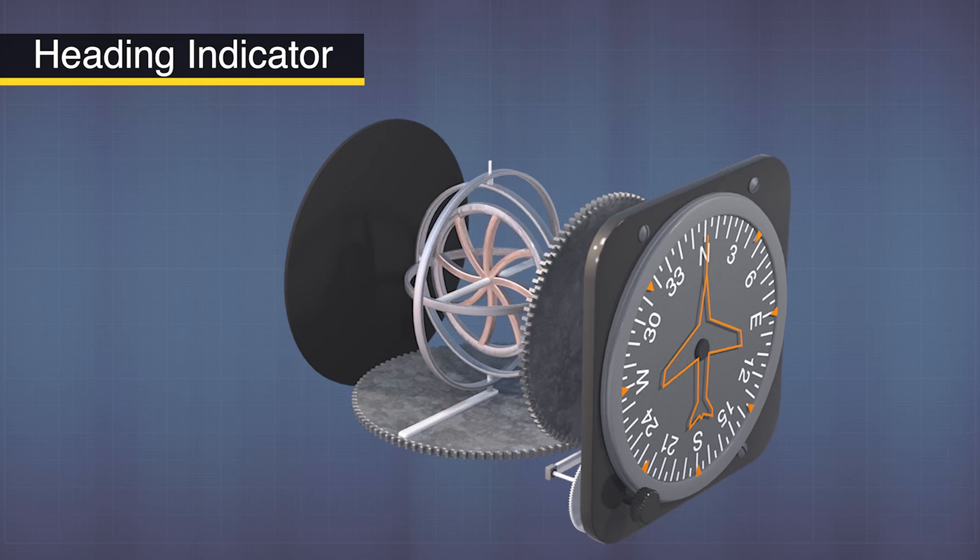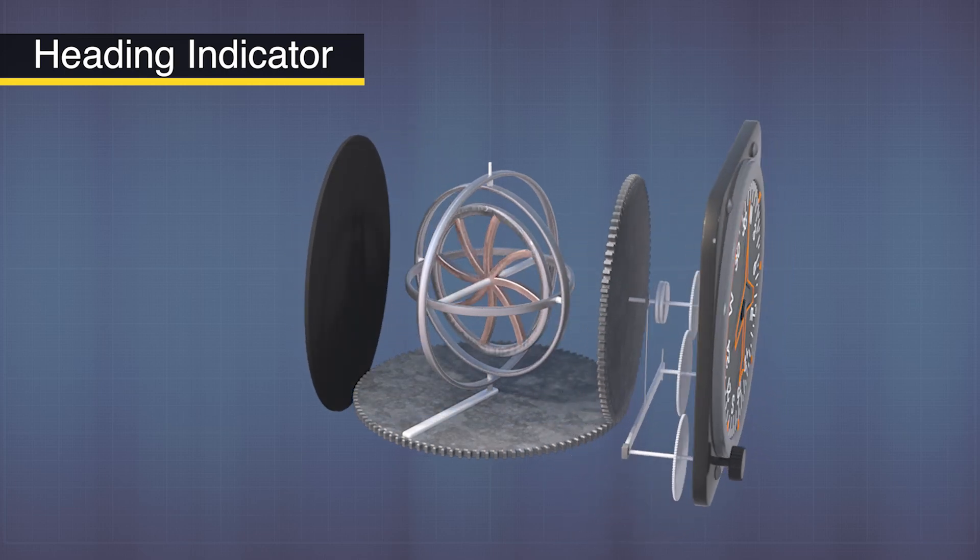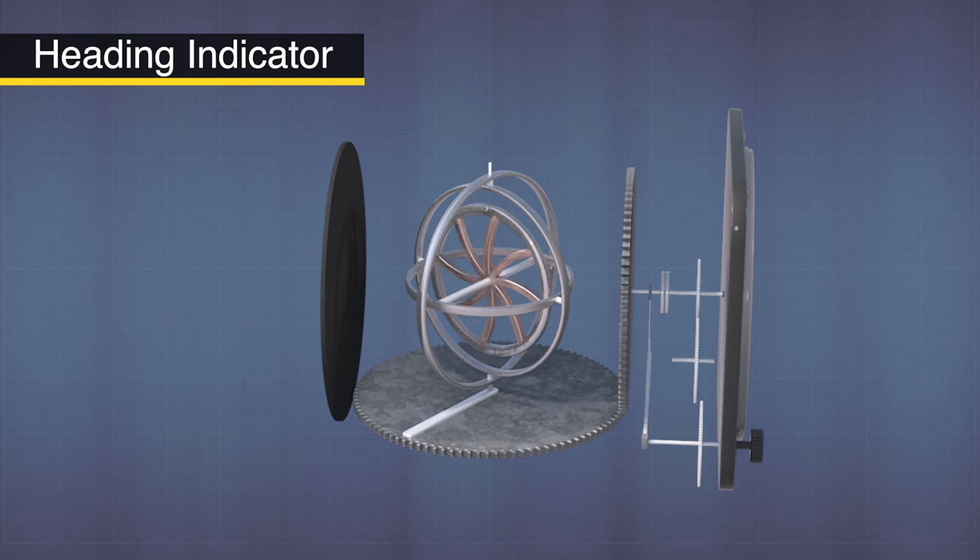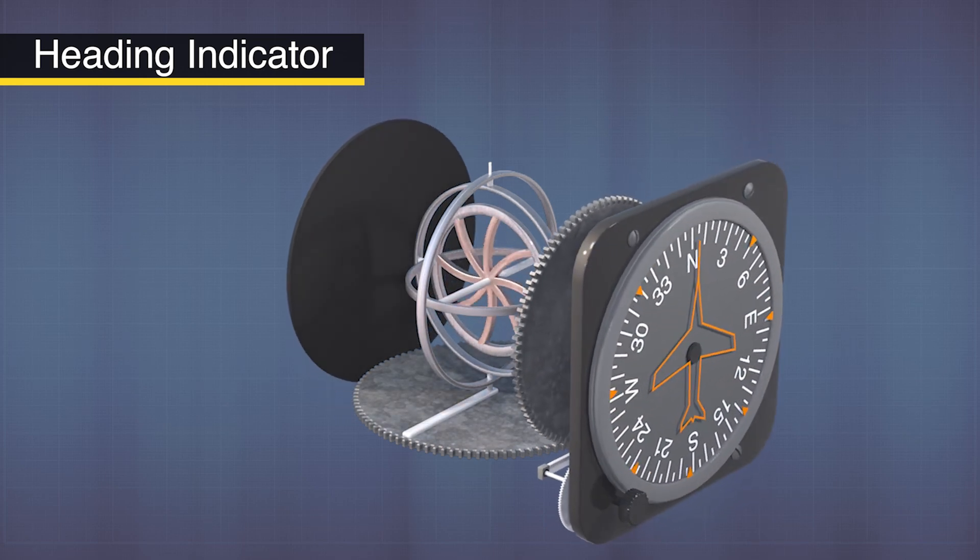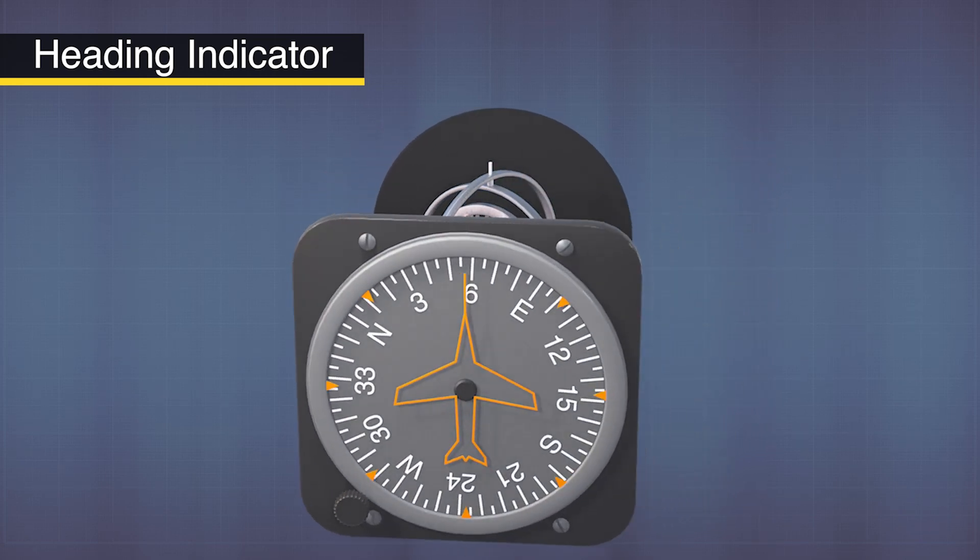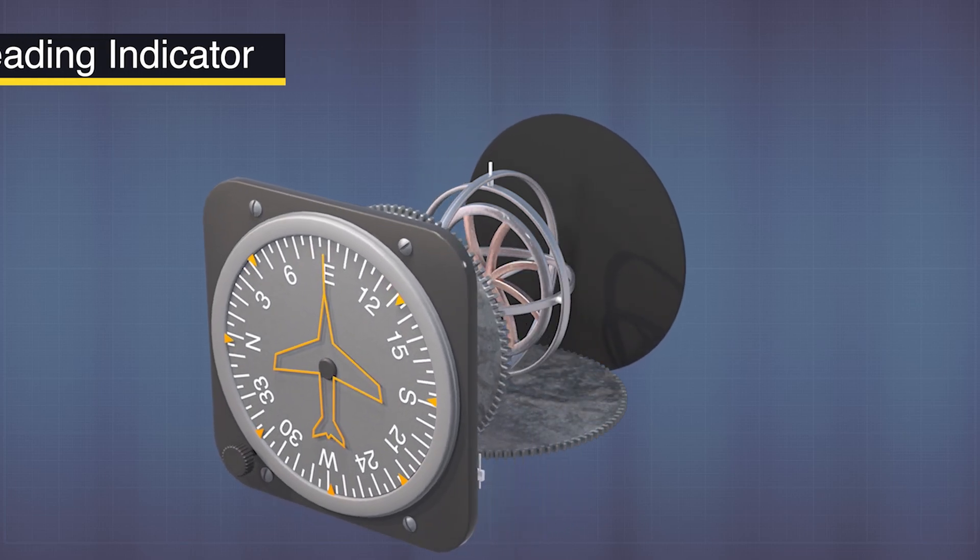The heading indicator is slightly different. Its gyroscope spins perpendicular to the horizon. The gyro holds the main drive gear in place using rigidity in space, which causes the compass card gear to rotate around it. This translates to a rotation that follows the aircraft's heading.